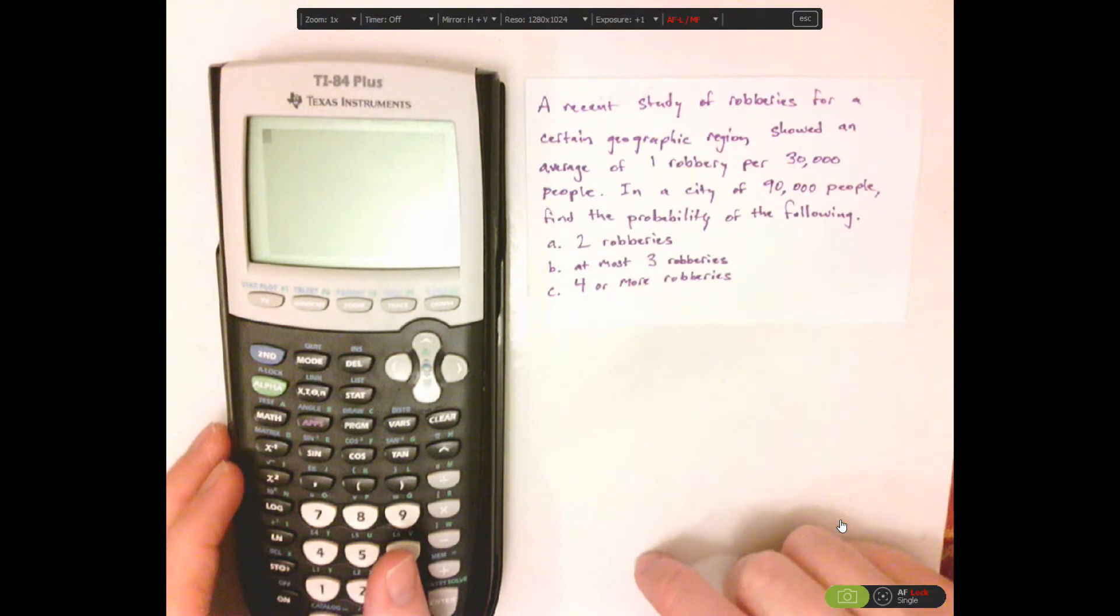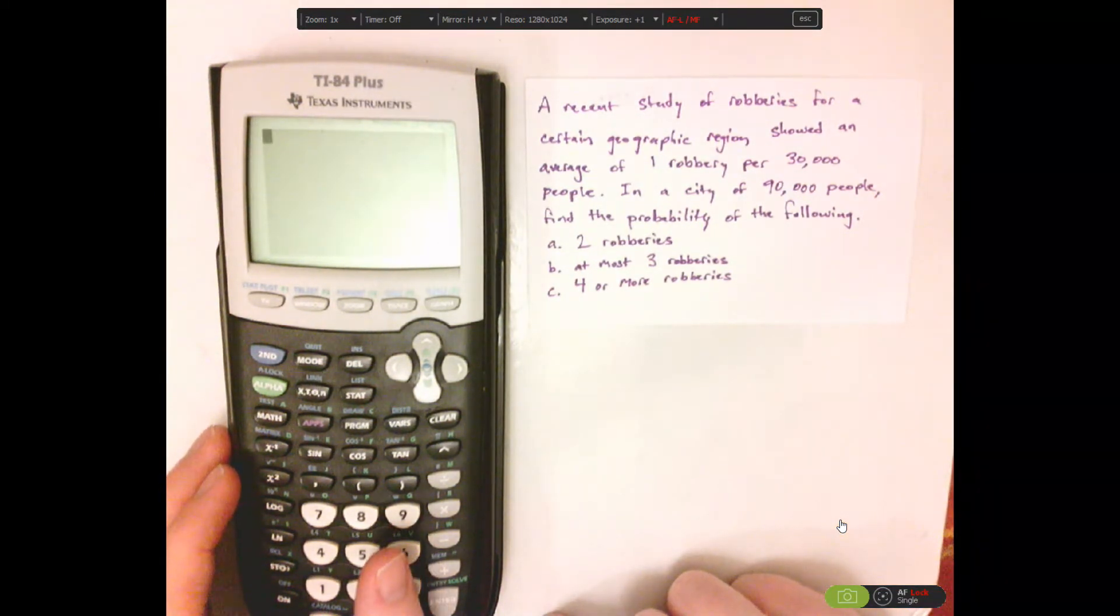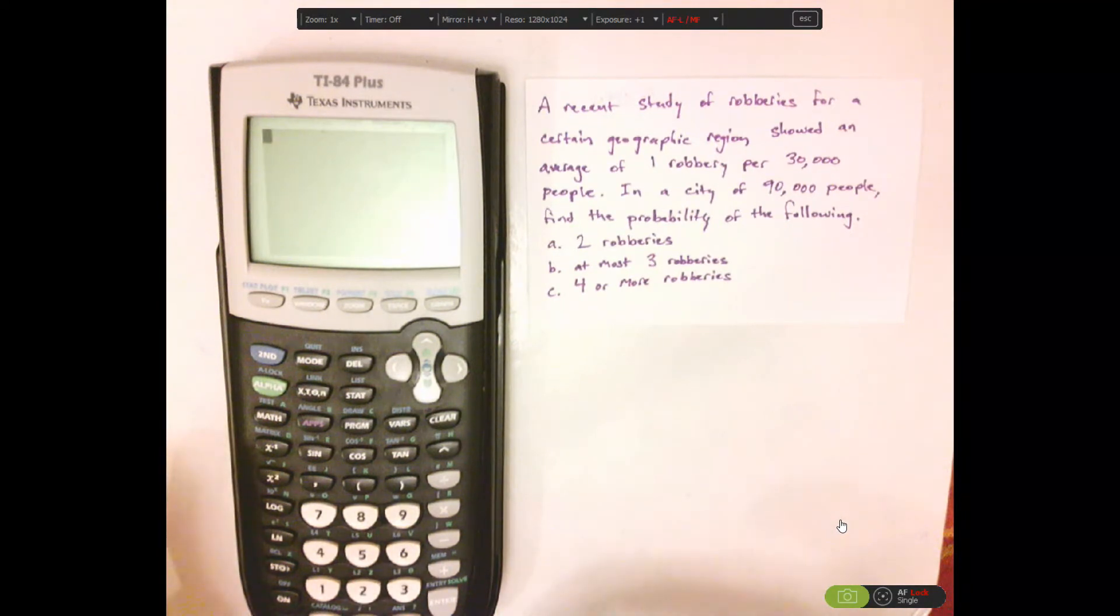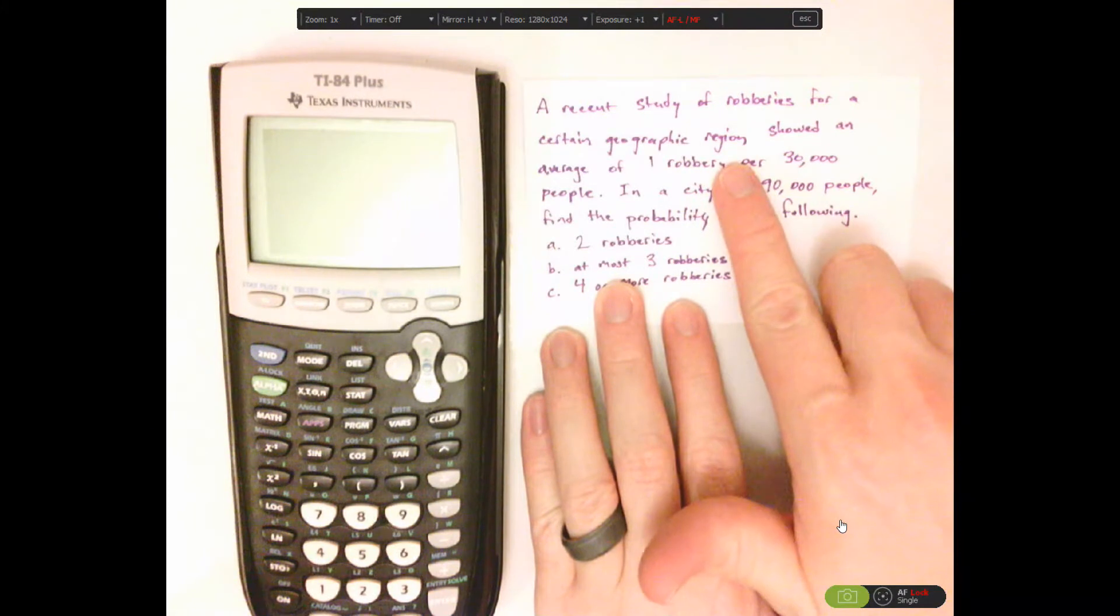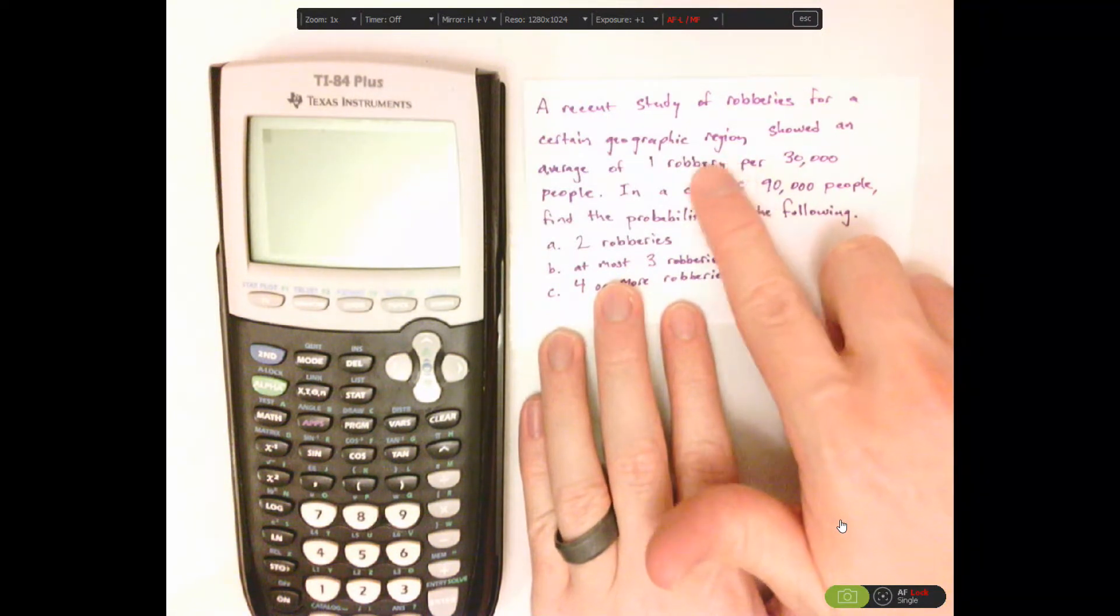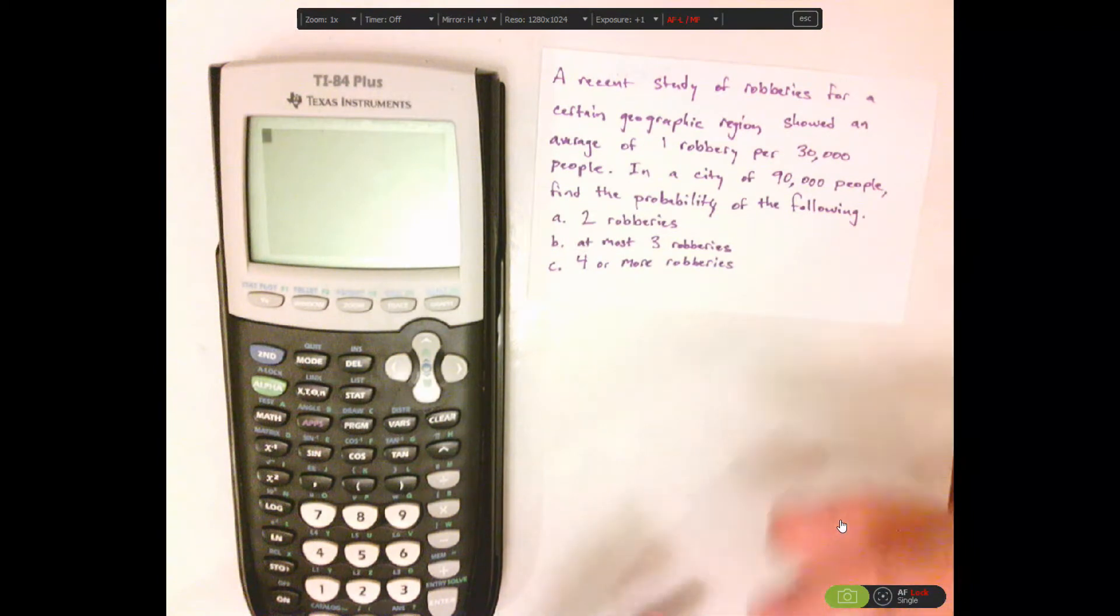Alright, so let me show you how to do this on your TI-84 Plus Calculator. Now, I know it's a Poisson distribution because it's within a region. So, within a region, you're given an average, sometimes even a percentage, of that particular region or area, you're going to use Poisson distribution.